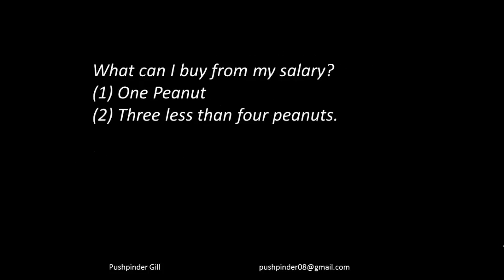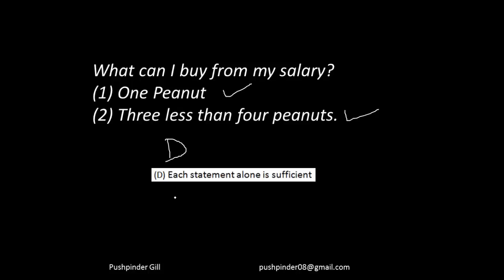Answer choice D: if the question is what can I buy from my salary, the first statement says 1 peanut. The second statement says 3 less than 4 peanuts — again 1 peanut. Both statements are individually able to give me the answer. So D is the answer if each statement alone is sufficient to give the answer — first statement gives the answer and second statement also gives the answer.